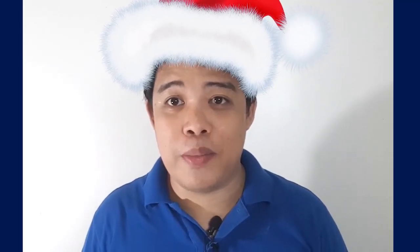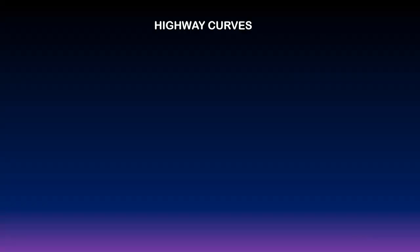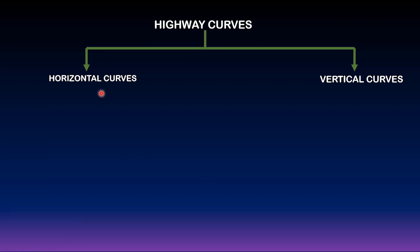Merry Christmas from JVM Lecture Series. Today I'm going to discuss spiral or transition curves. Let me introduce you first to highway curves. For highway curves, if you are designing the geometric design of a highway, you have to consider generally two things: horizontal curves and vertical curves.